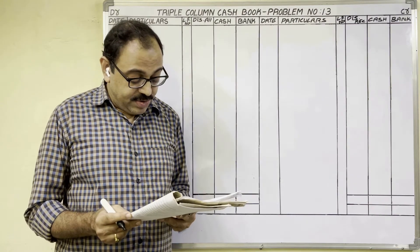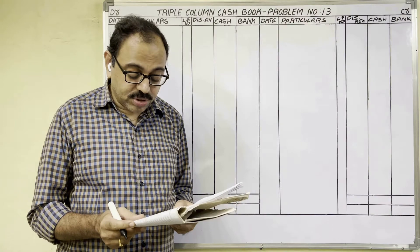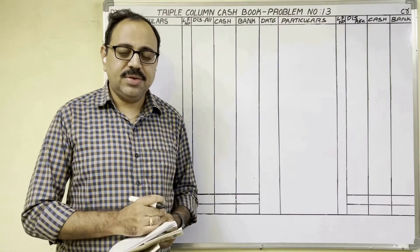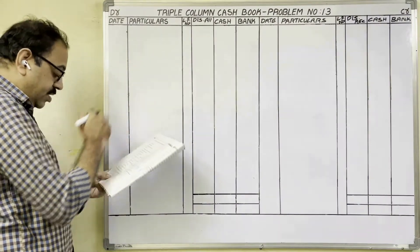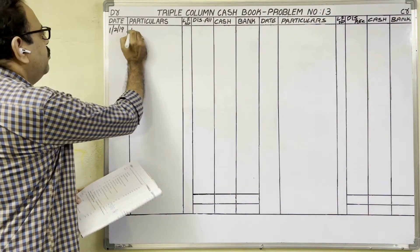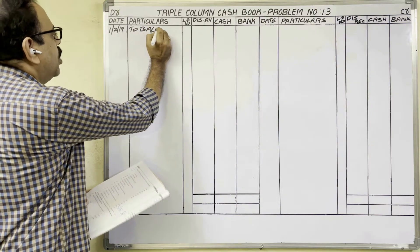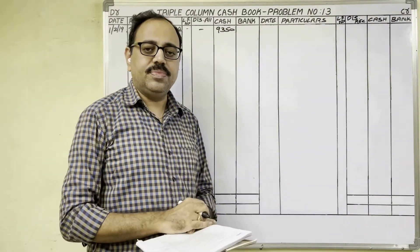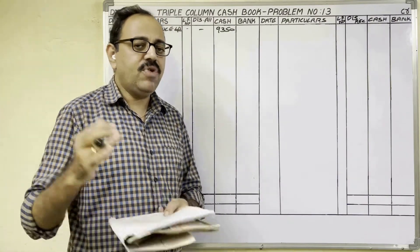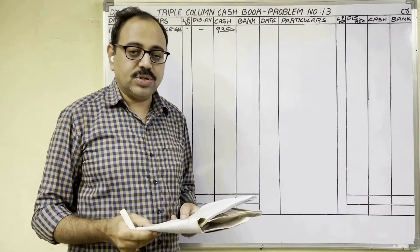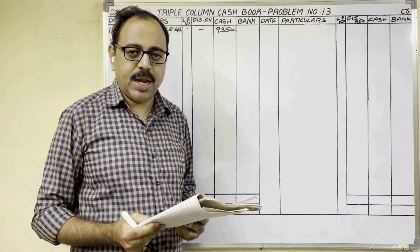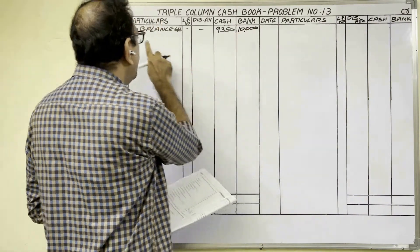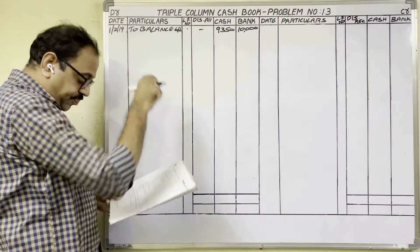Let us start the problem. Prepare a triple column cash book from the following transactions. 1st February 2019: Cash 9350 — cash means cash in hand in our firm. Cash is an asset and assets show a debit balance, so write '1st Feb 2019, To Balance b/d' in the cash column: 9350. Next, Bank 10,000 — cash at bank is also an asset showing a debit balance, so write 10,000 in the bank column.